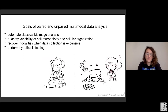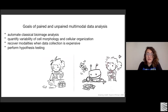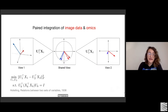One thing both paired and unpaired multimodal data analysis have in common is the desire to automate classical bioimage analysis. As depicted in a wonderful doodle by my collaborator Virginia Woolman, we would really like to use machine learning to quantify variability of cell morphology and cellular organization, or maybe recover modalities when data collection is expensive. This could support experimental design and hypothesis testing — goals that both paired and unpaired data modalities share. At the crux of many of these methods are some very simple ideas.